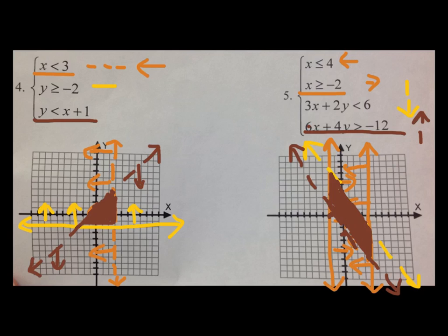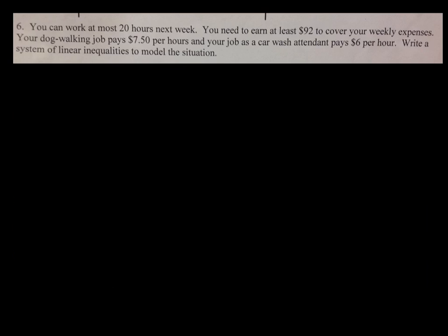Now here's a word problem. You can work at most 20 hours next week. You need to earn at least $92 to cover your weekly expenses. Your dog walking job pays $7.50 per hour and your job as a car wash attendant pays $6 per hour. Write a system of linear inequalities to model this situation.